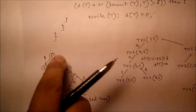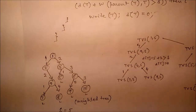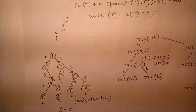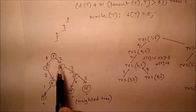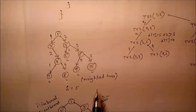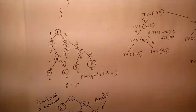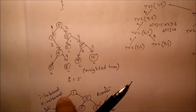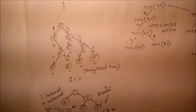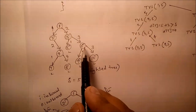A weighted tree can be used to model a distribution network in which electric signals or commodities such as oil are transmitted. Nodes in the tree correspond to receiving stations, and edges correspond to transmission lines. It is conceivable that in the process of transmission some loss occurs — transmitting oil or a signal from one place to another.